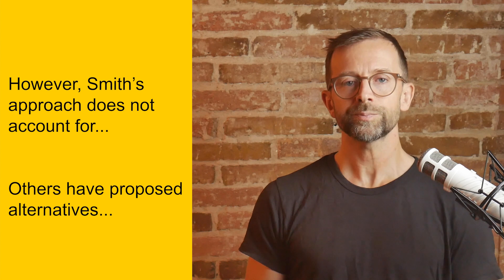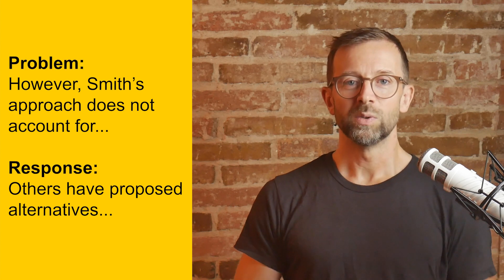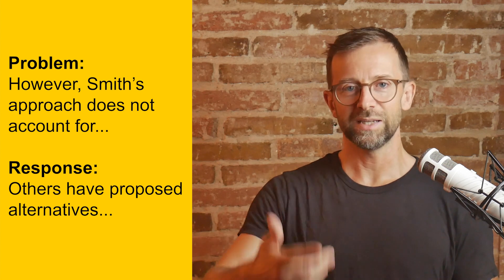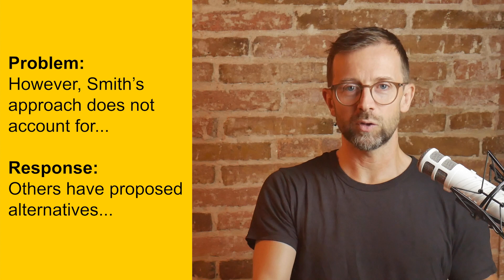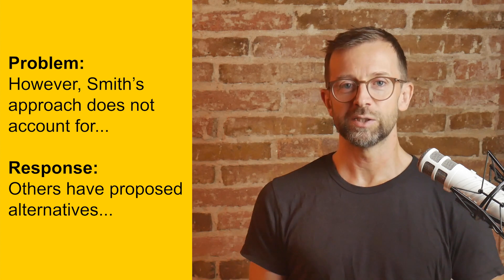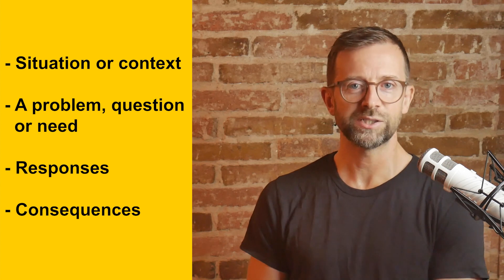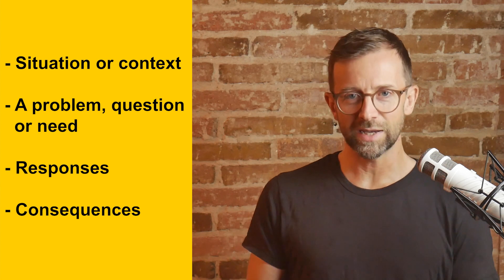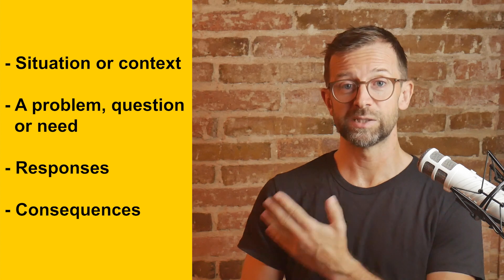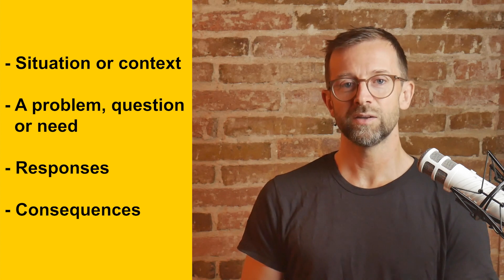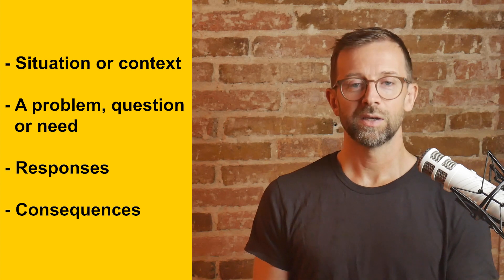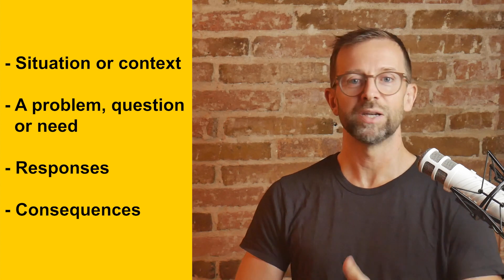So in this second example, we're introducing a problem, which then serves as something for the literature to respond to. It gives a reason for those alternatives to exist and for the reader to be interested in them. The underlying principle here is that almost all the information you present can be framed as a situation or context, a problem or question or need — which may itself arise from that situation — and then a response to that problem, question or need, or a consequence of an idea, an action, an event or discovery.